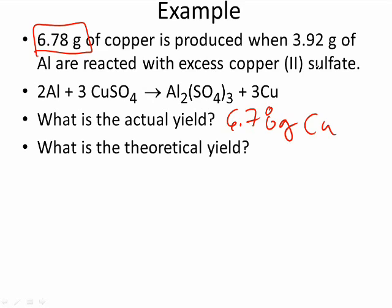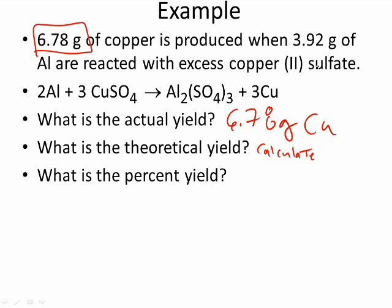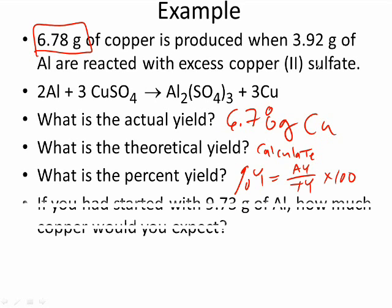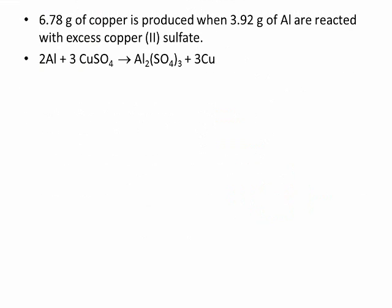What is the theoretical yield? We have to calculate that through stoichiometry. The percent yield equals actual yield over theoretical yield times 100. We started with 3.92 grams of aluminum, and 6.78 grams of copper was produced — that's the actual yield when 3.92 grams of aluminum are reacted with excess copper-2 sulfate.